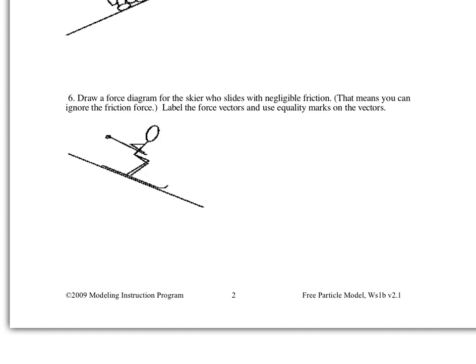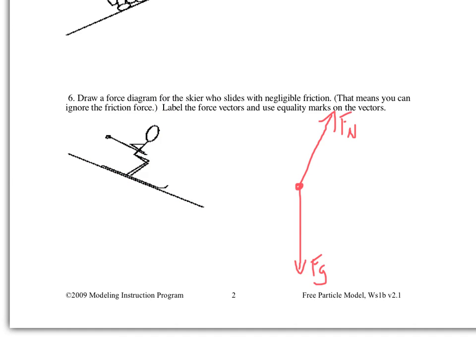I'll do one here for an object that's accelerating. In this case, the skier going downhill — it tells you that friction is negligible. So obviously, if the guy's skiing downhill and there's no friction, he's going to be accelerating. Drawing the force diagram: I have gravity going down, and here's my surface, so my normal force should go perpendicular to the surface. Those are the only two forces, because we said if there was friction it would go this way, but it's negligible — so our force diagram should look like this.